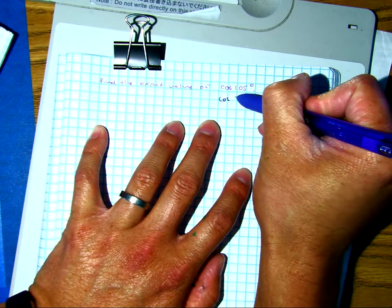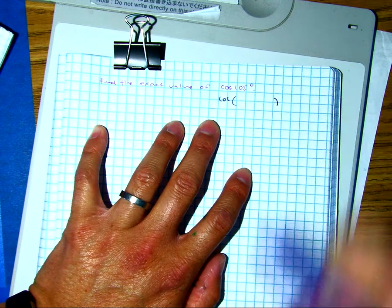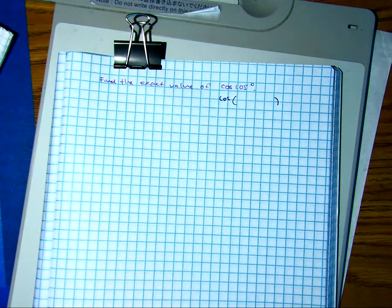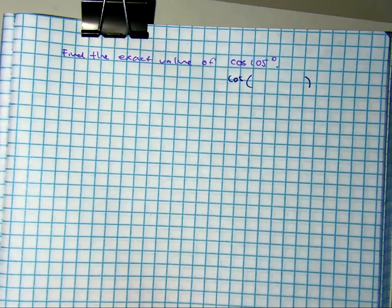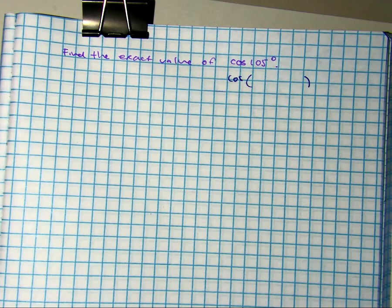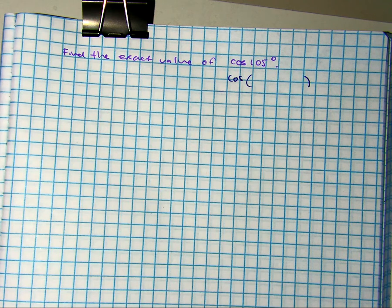Talk to your partner. I need two angles that either add or subtract to be 105. 20 seconds. Two angles that either add or subtract to be 105.